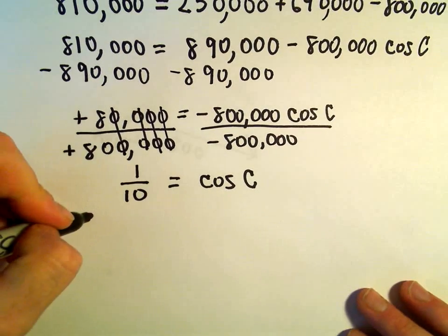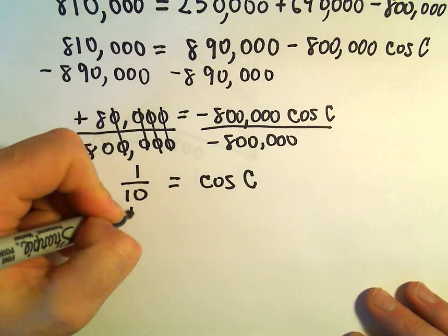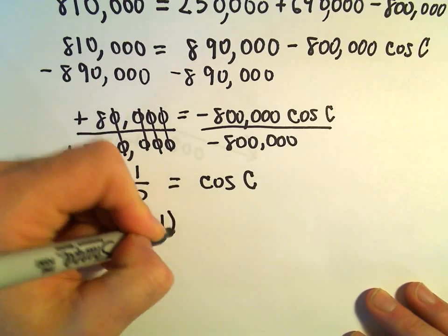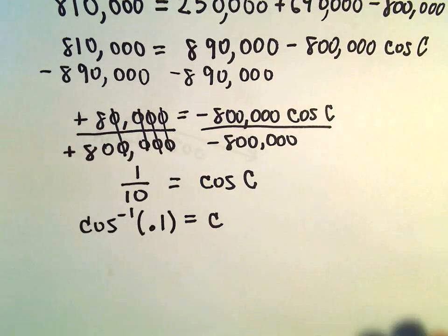So now if we take the inverse cosine of both sides, so 1 tenth is just 0.1, that'll give us our angle C. So now let's just plug this into a calculator. So 0.1, the inverse cosine of that.